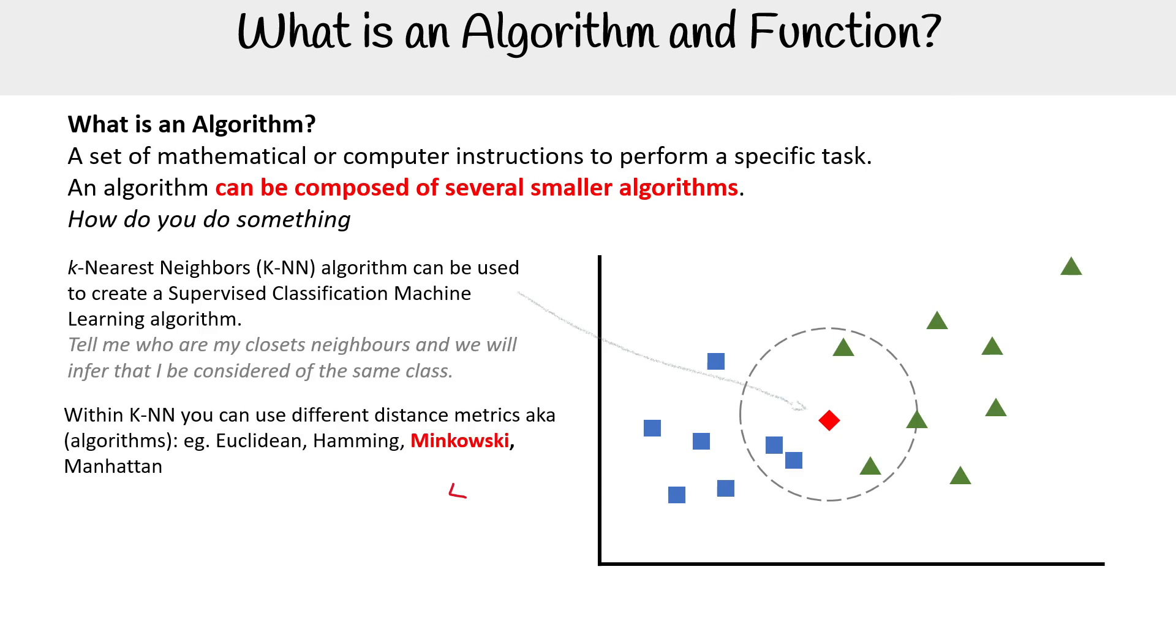Within KNN, you can use different distance metrics such as Euclidean, Hamming, Minkowski, Manhattan. There's all different ones that you can utilize.